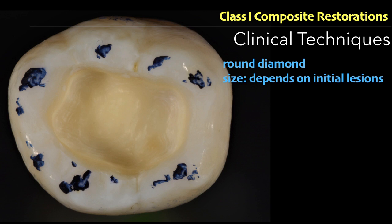The cavity is prepared using a round diamond with air and water spray. We use air and water spray so we don't dry the dentine — dentine has a lot of water and collagen, and once you dry it, the dentine loses its water, which leads to sensitivity. The most frequent complaint with composites is post-operative sensitivity. We must always cut the tooth with air and water spray to cool the dentine so water remains in its position.